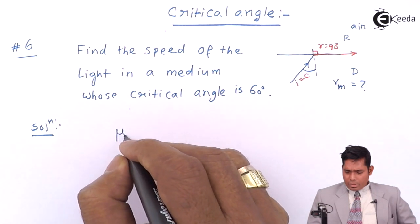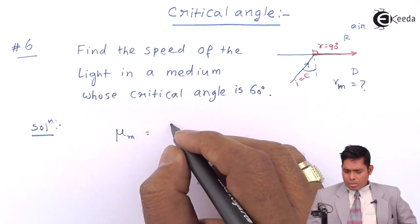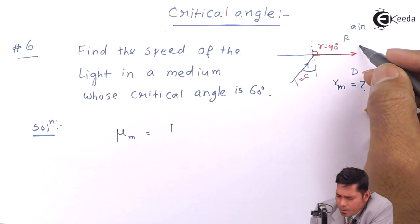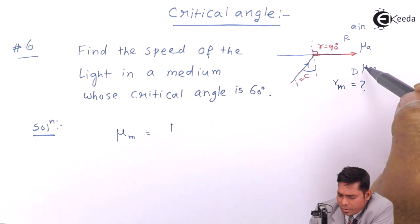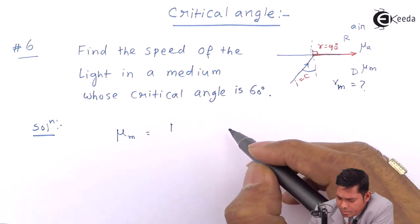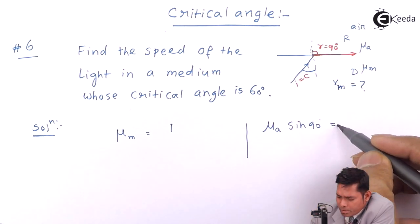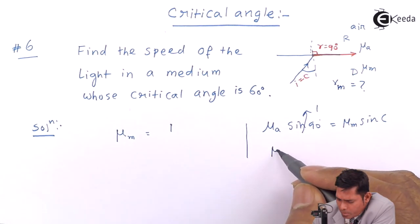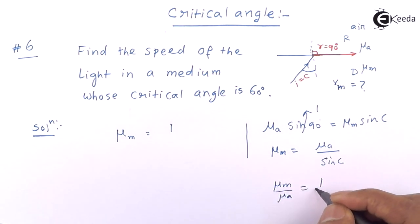Now, by definition, the refractive index in the medium is 1 by—if I apply Snell's law, let us apply Snell's law here. Mu a is for this medium, mu m for this medium, refractive index. Mu a sine 90, and that must equal mu m sine C. This is 1.